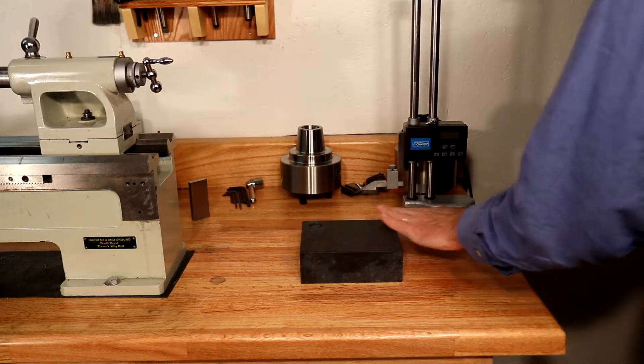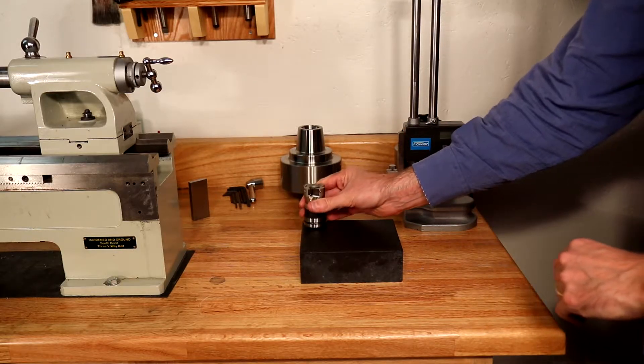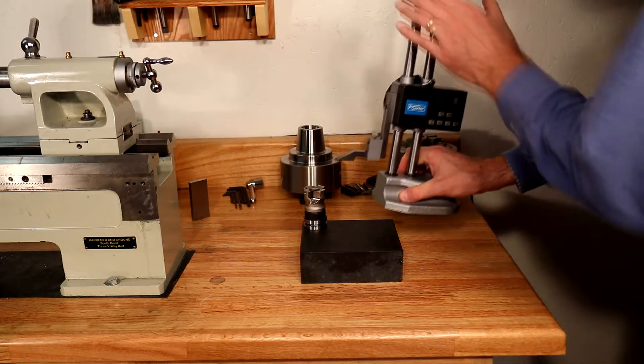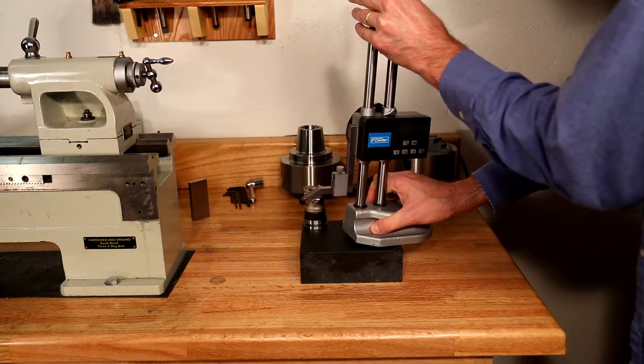This is the surface plate that Tormach sells to measure tool length using a height gauge. Unfortunately, the size is so small that many height gauges will be poorly supported.